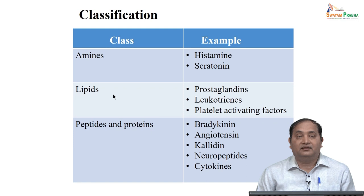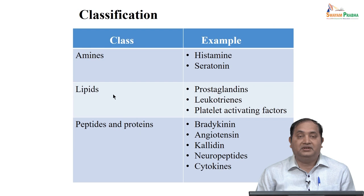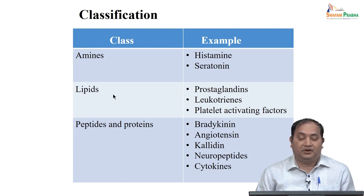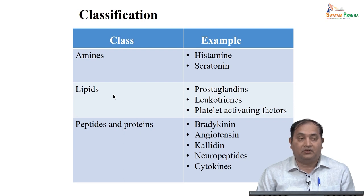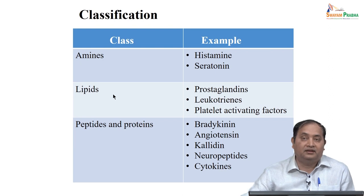We can see that cytokines play a lot of roles in different diseases, and many drugs have been developed as anti-cytokine therapies. There are some cytokines which are pro-inflammatory, such as in rheumatoid arthritis and other inflammatory or autoimmune conditions. Anti-cytokine therapy has been shown to be useful.